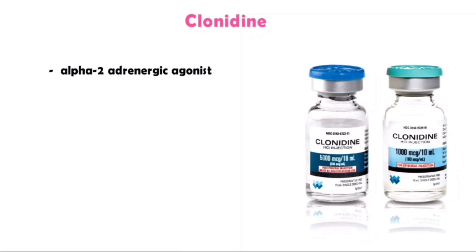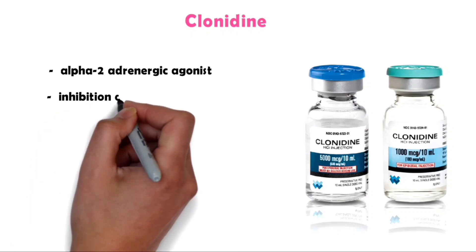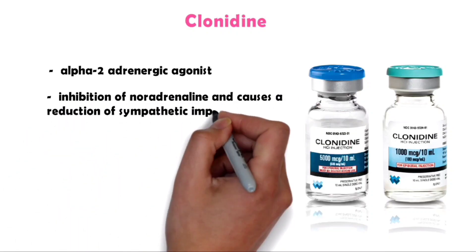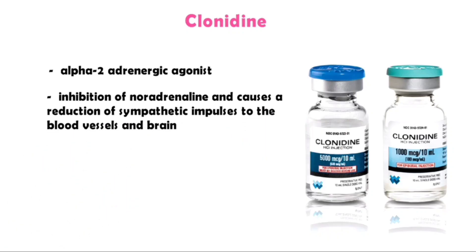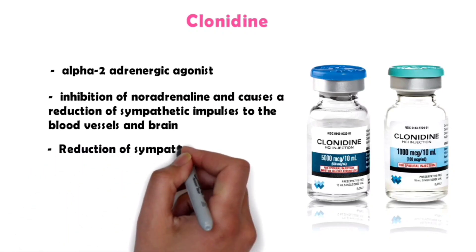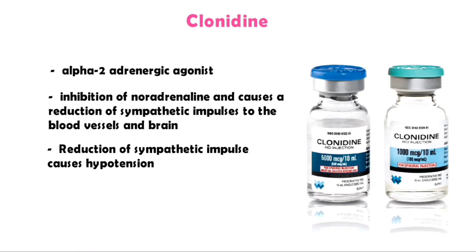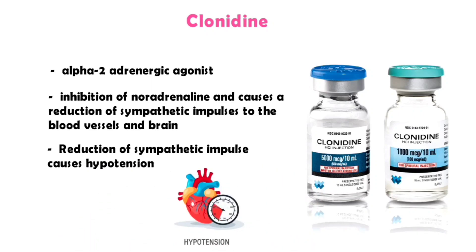Coming to our topic — Clonidine is an alpha-2 adrenergic agonist. This alpha-2 receptor action is an inhibition of noradrenaline and causes a reduction of sympathetic impulses to the blood vessels and brain. Reduction of sympathetic impulse causes a reduction in hypertension, so Clonidine is mainly used to treat high blood pressure.